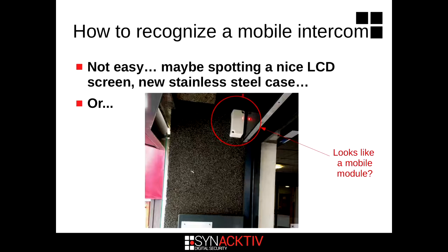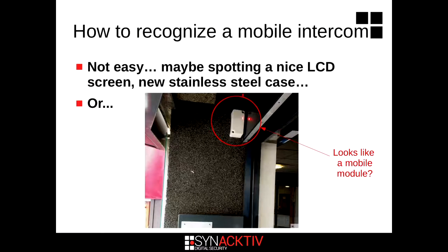How do you recognize a numeric intercom? Maybe by spotting a nice LCD screen or a new steel case. But sometimes you get very lucky and see that there is a 3G module, sometimes outdoor or indoor, with three or four LEDs indicating the quality of mobile network reception. With that, we can see it's likely using the mobile network — and that's good to know because maybe we can do some attacks on it.